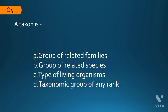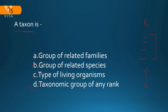The next question: a taxon is — a group of related families, a group of related species, a group or type of living organisms, or a taxonomic group of any rank? A taxon indicates any rank in taxonomy — it can be species, genus, family, and so on. The correct answer is: a taxon is a taxonomic group of any rank.